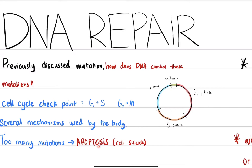If there are too many problems detected, this could trigger apoptosis — cell suicide. The cell essentially determines that there are too many issues to handle and initiates self-destruction. Apoptosis is the body's way of eliminating cells that are too damaged to continue.